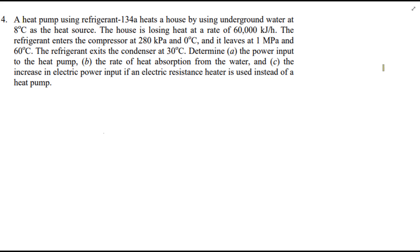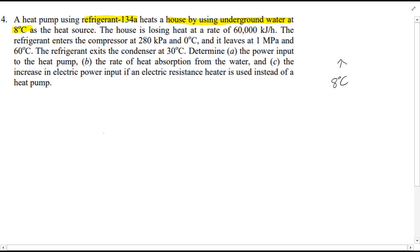Moving on — refrigerant 134a heats the house using underground water at 8 degrees C, so this is our cold environment at 8 degrees C. This feeds into our heat pump, and QL is the heat removed from the cold space. It's important to note that the rate of heat loss from the house is given as 60,000 kilojoules per hour.